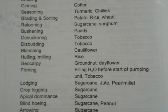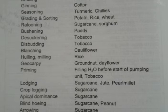Ginning is for cotton. Seasoning for turmeric and chilies. Grading and sorting for potato, rice and wheat. Ratooning is specially for sugarcane and sorghum.